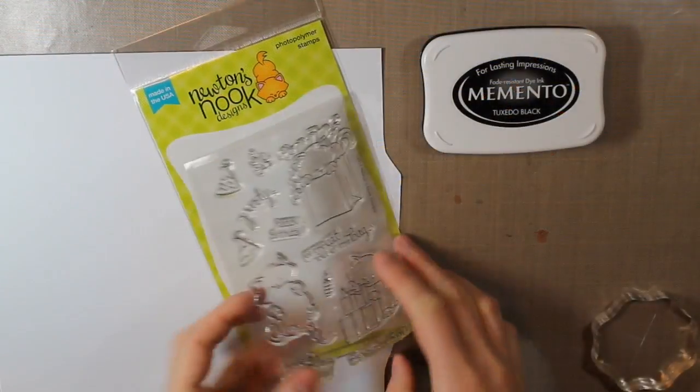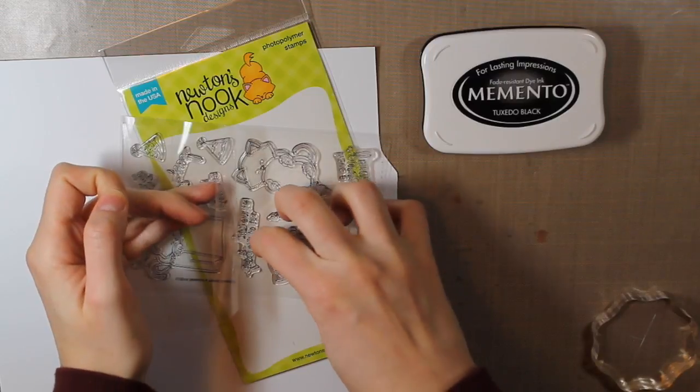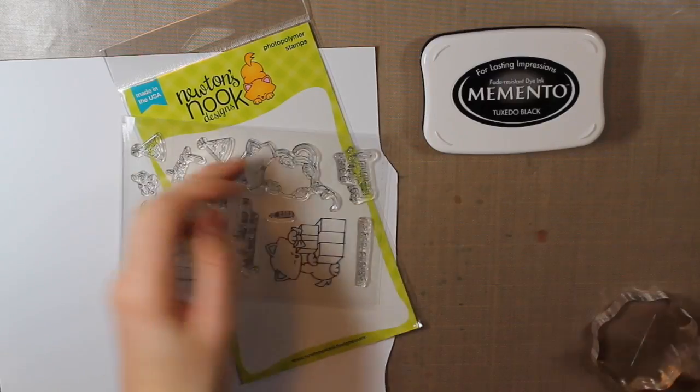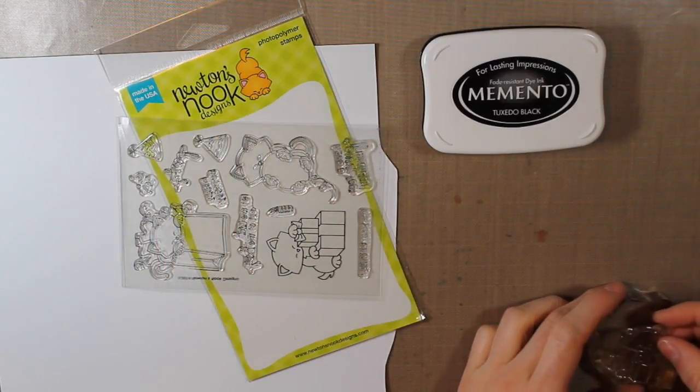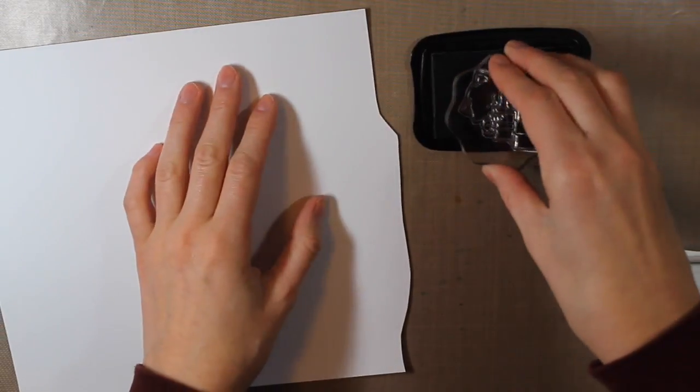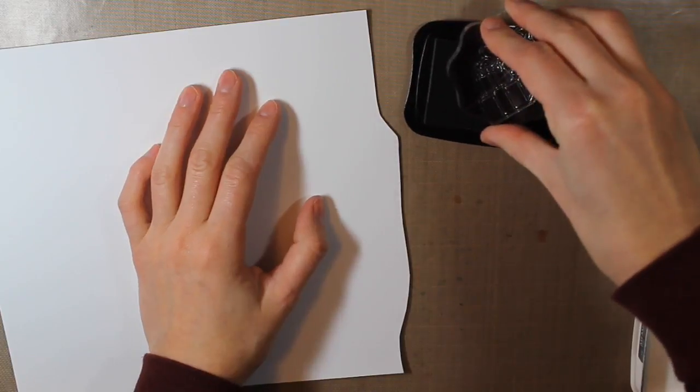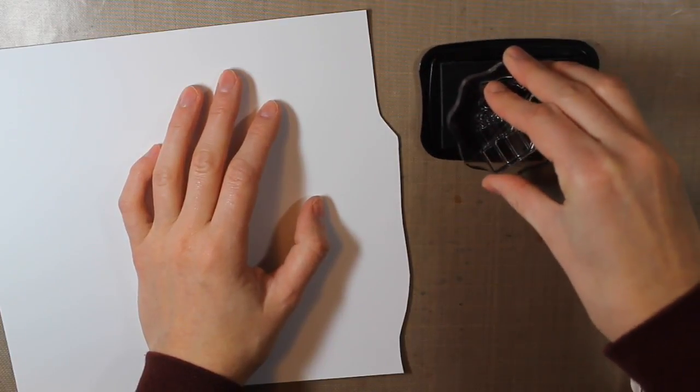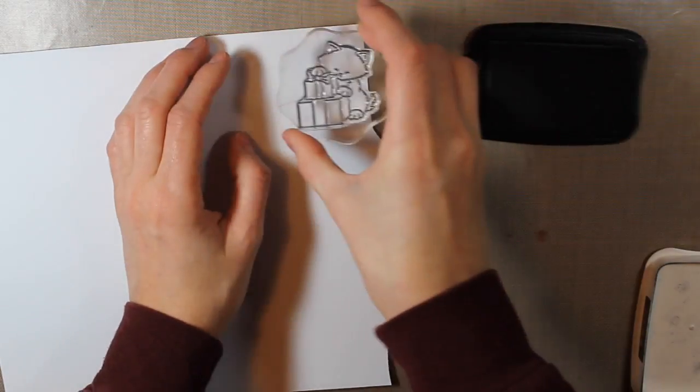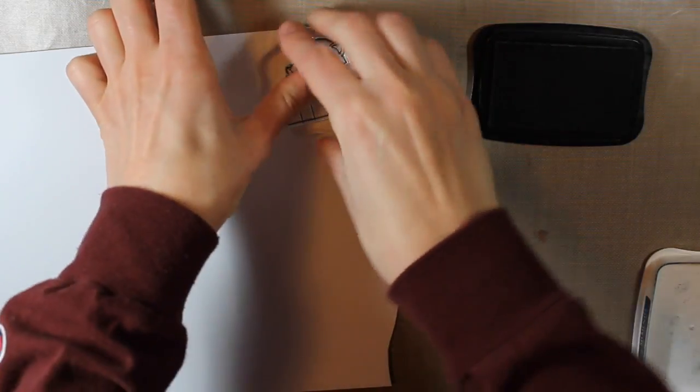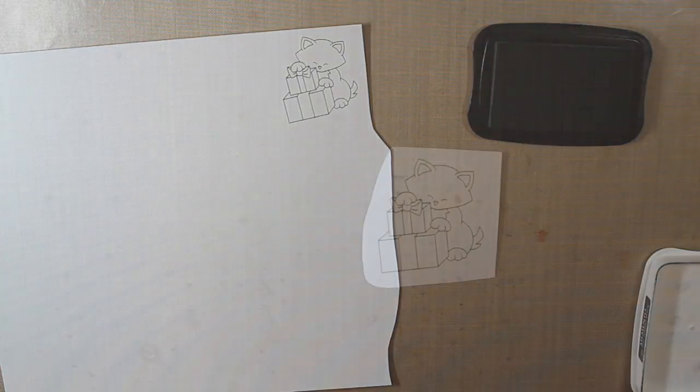So I'll go ahead and stamp my image. This is from Newton's Nook and I'm stamping this with Tuxedo Black Memento ink on a piece of Coordination's 110 pound cardstock. So I'm just going to go ahead and ink up my stamp really well. And I chose the little cat that's kind of peeking around the large present.